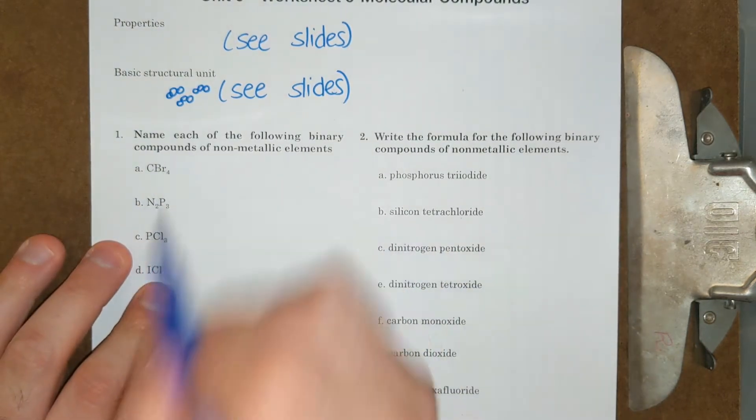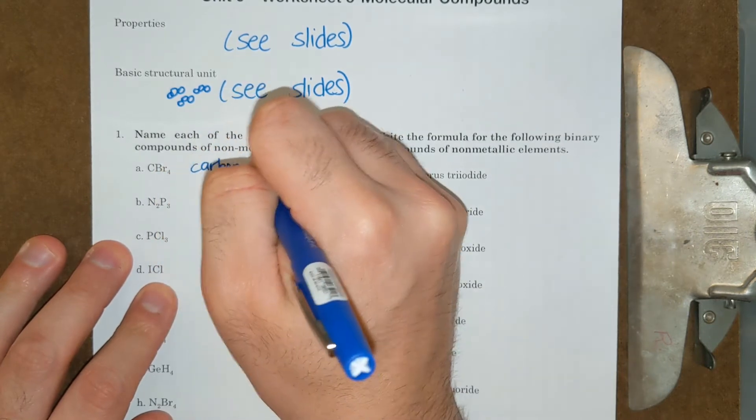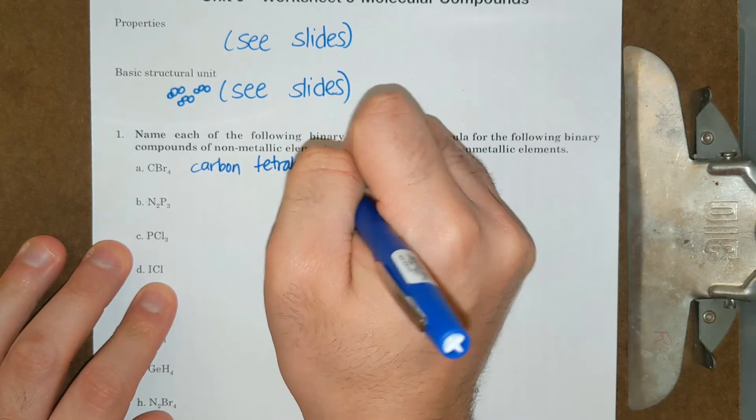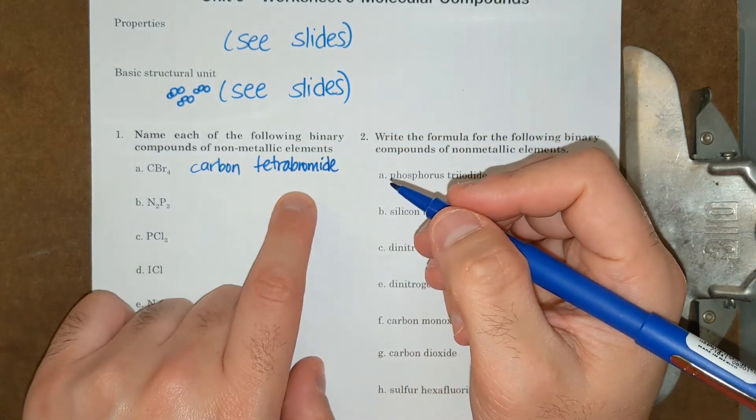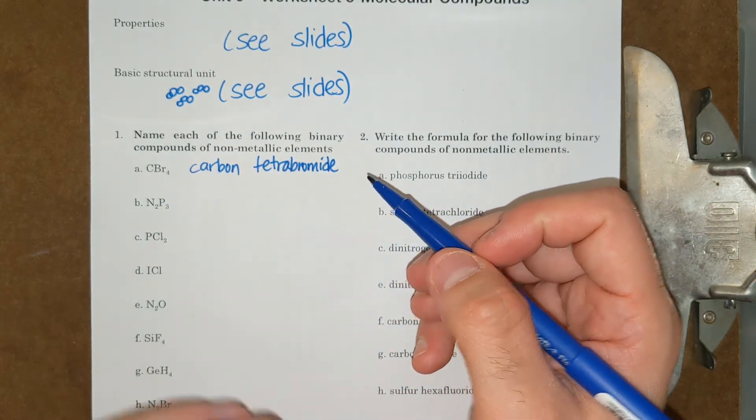We have CBr, one carbon, four bromines. This is carbon tetrabromide, tetra meaning four. All right, so there's Greek prefixes that we add to the mix now when naming and writing formulas for molecular compounds.